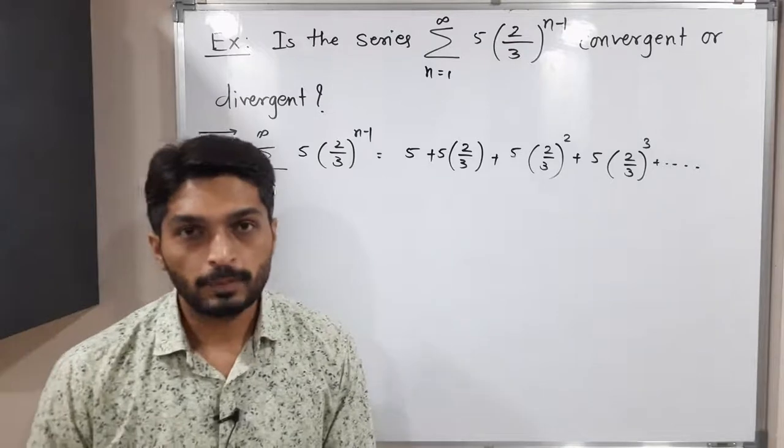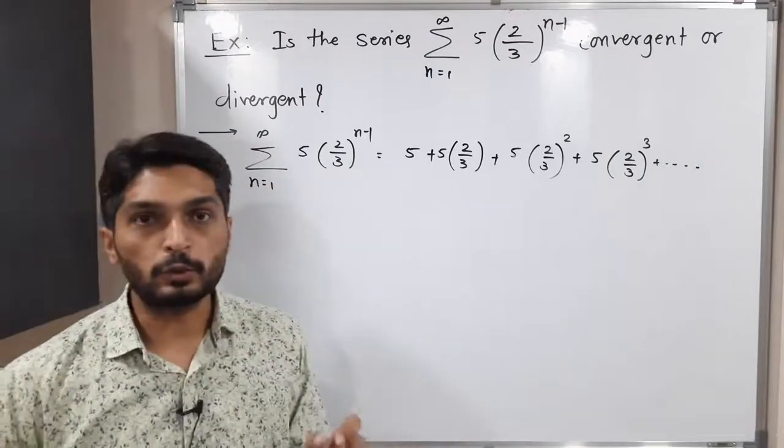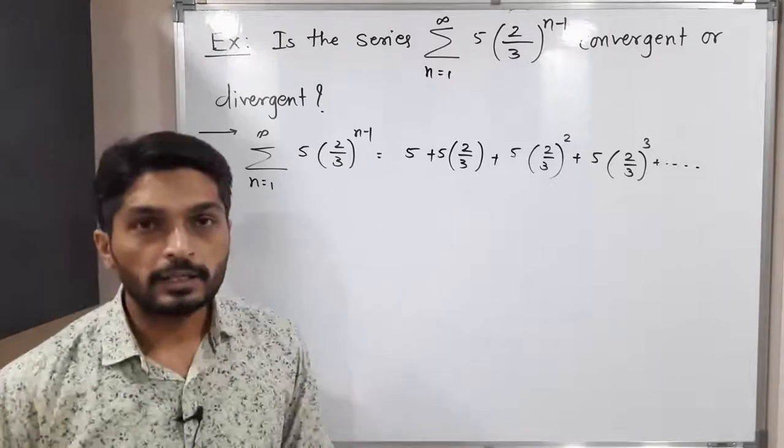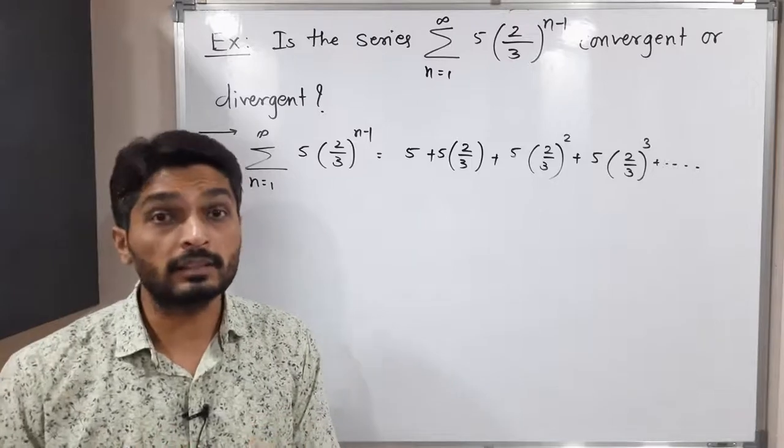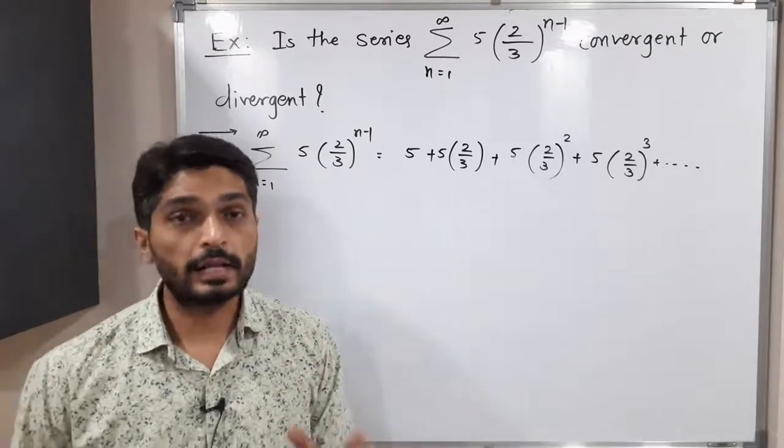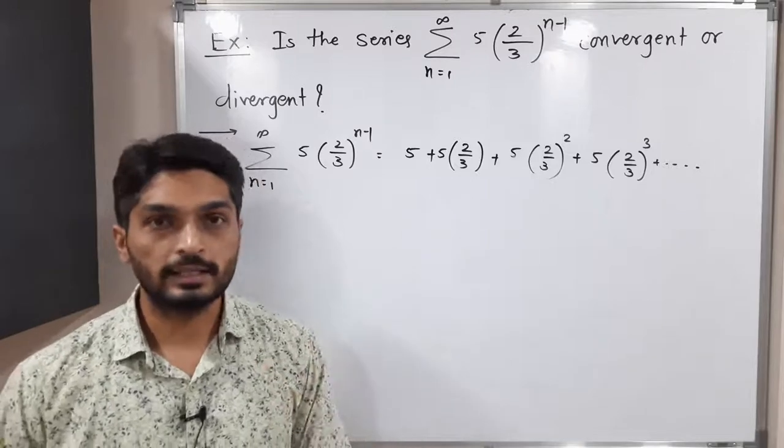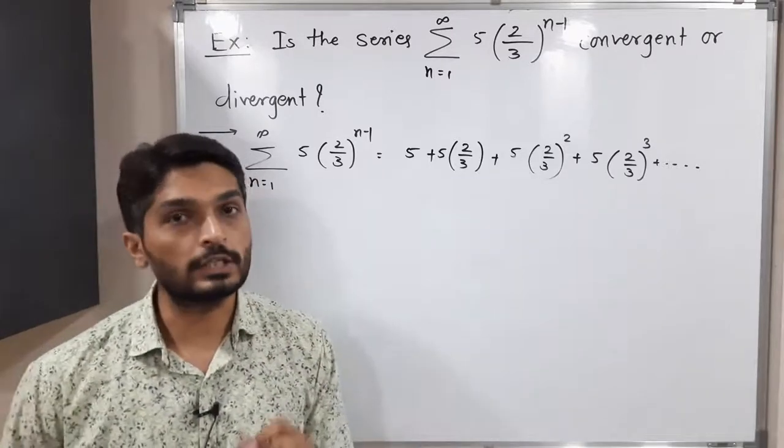So you can easily observe that if I multiply the first term by 2 by 3, we get the second term. If you multiply the second term by 2 by 3, we get the next term. If you multiply the third term by 2 by 3, we get the fourth term and so on. So that means this is a geometric series.